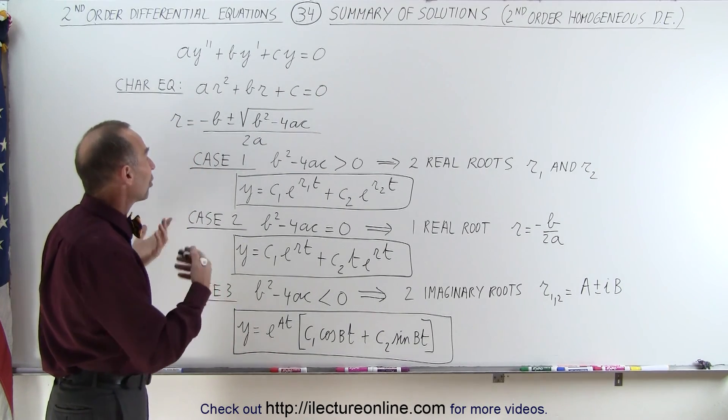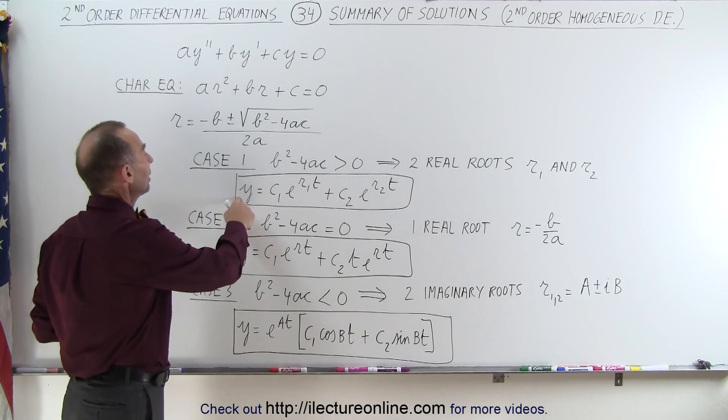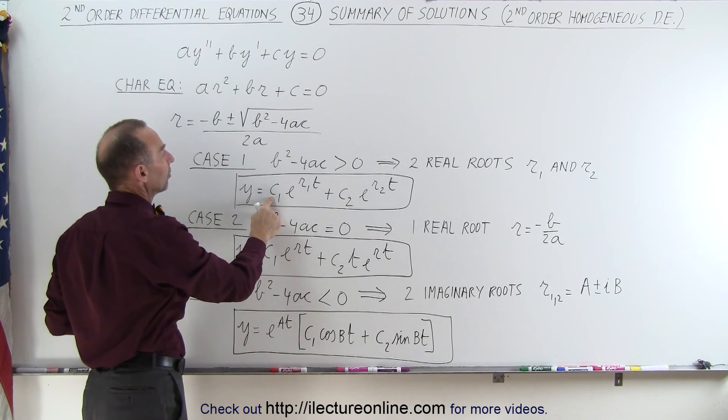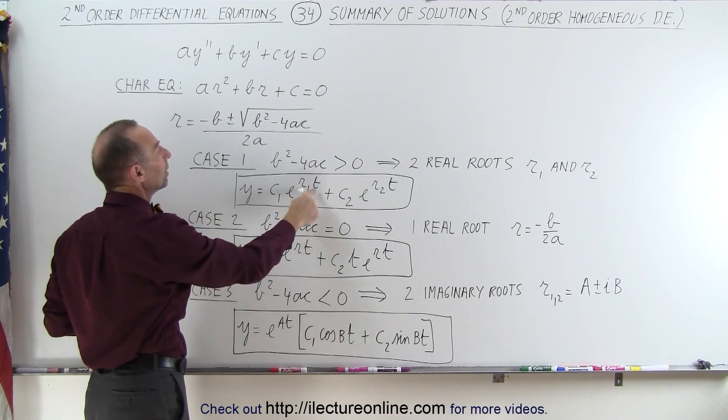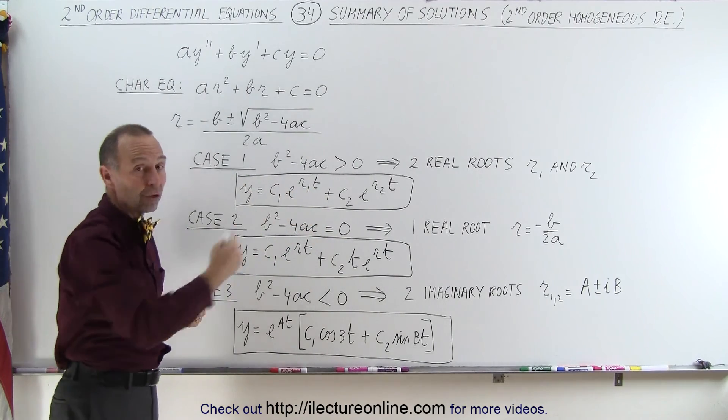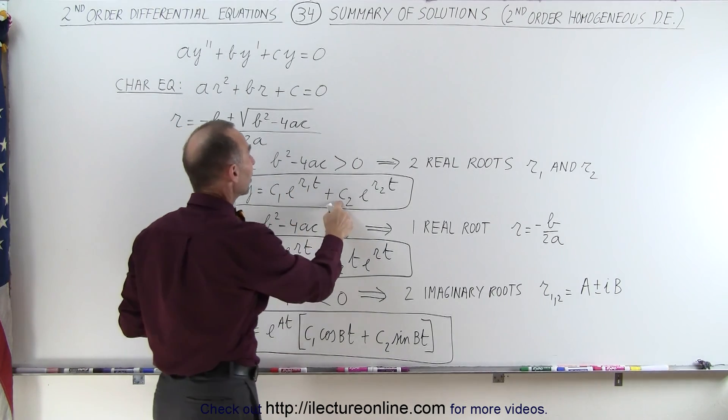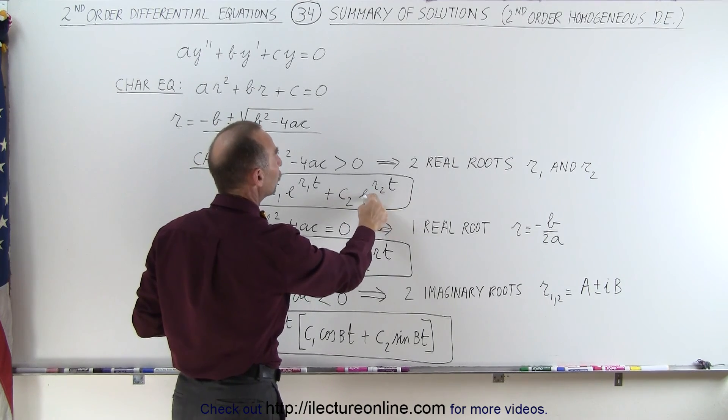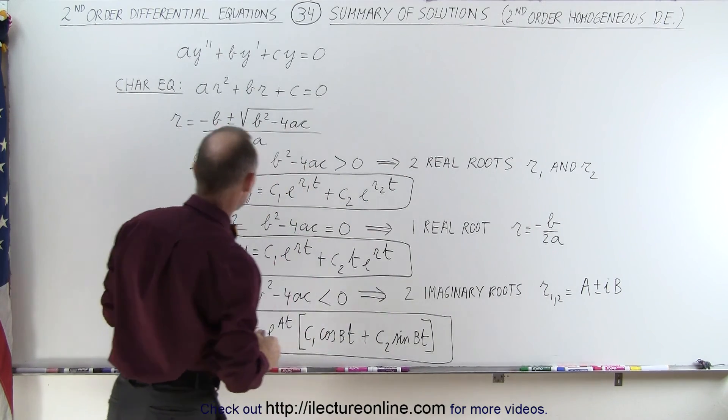And then the general solution is y, the solution to this differential equation, is equal to some constant times e^(r₁t), r₁ being the first of the two roots, plus another constant c₂ times e^(r₂t), r₂ being the other one of the two roots.